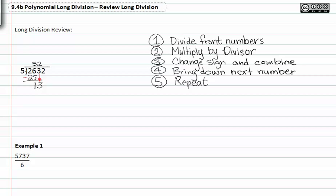We multiply by the divisor two times five to give us ten. We change the sign of the ten and combine the thirteen and the ten to get three.